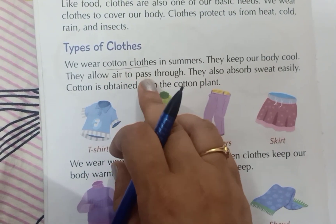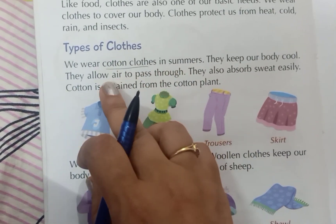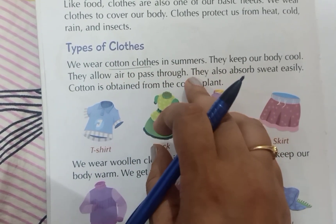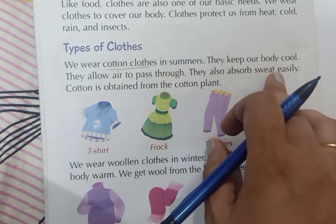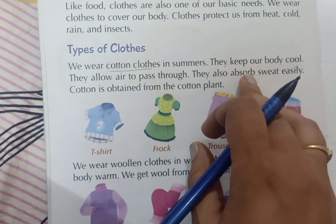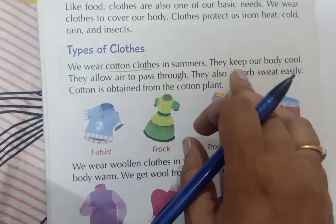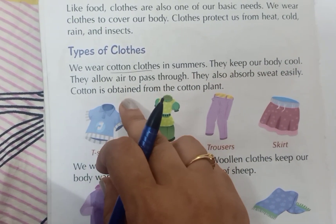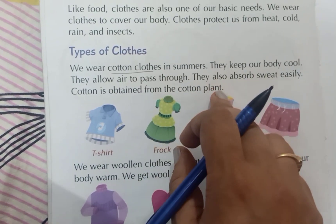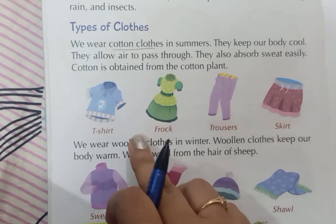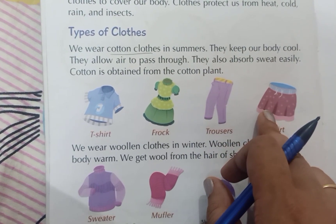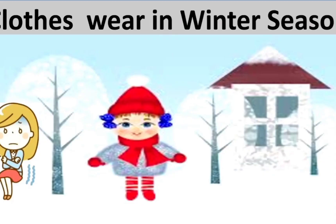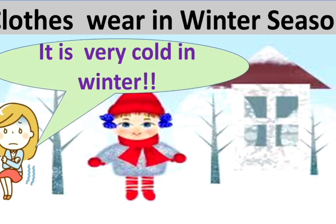Air easily passes through cotton clothes. They also absorb sweat easily — we all know that in summers we have so much sweating, so cotton clothes absorb sweat easily. Cotton is obtained from the cotton plant. Like your t-shirt, frock, trousers, skirt — these all are made up from cotton.